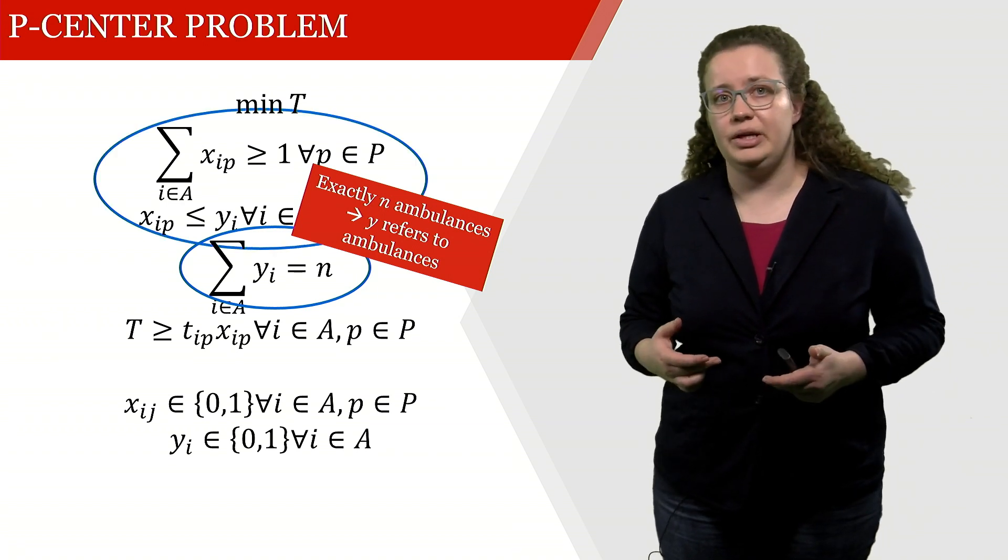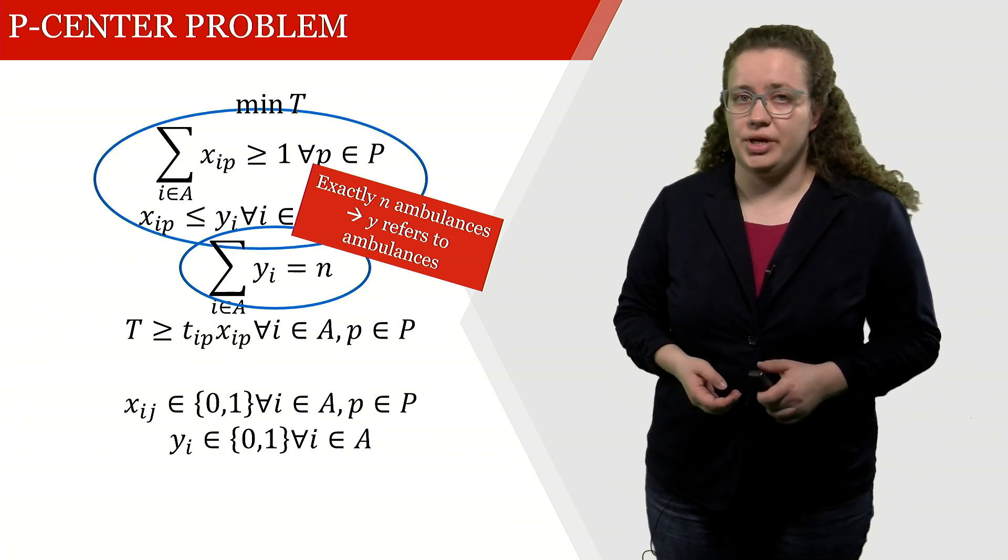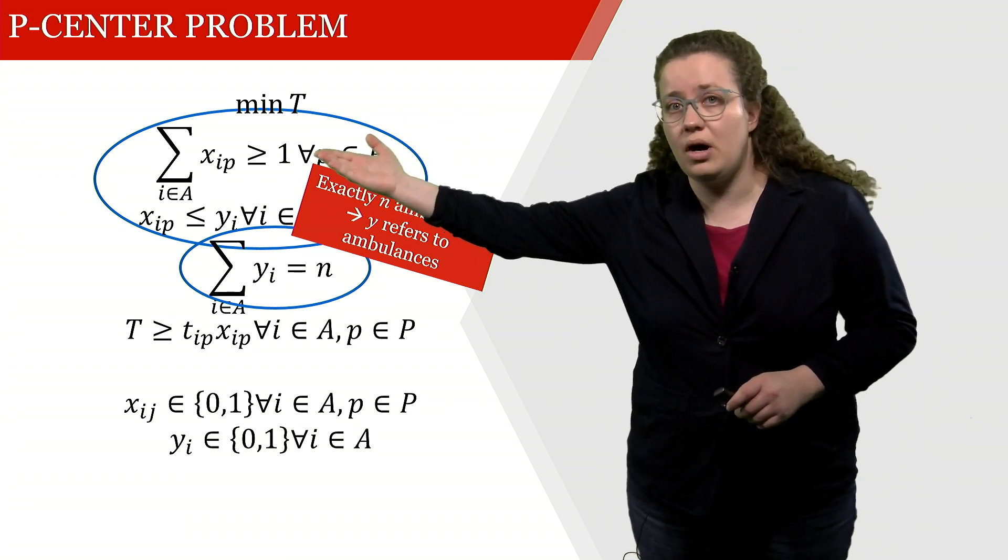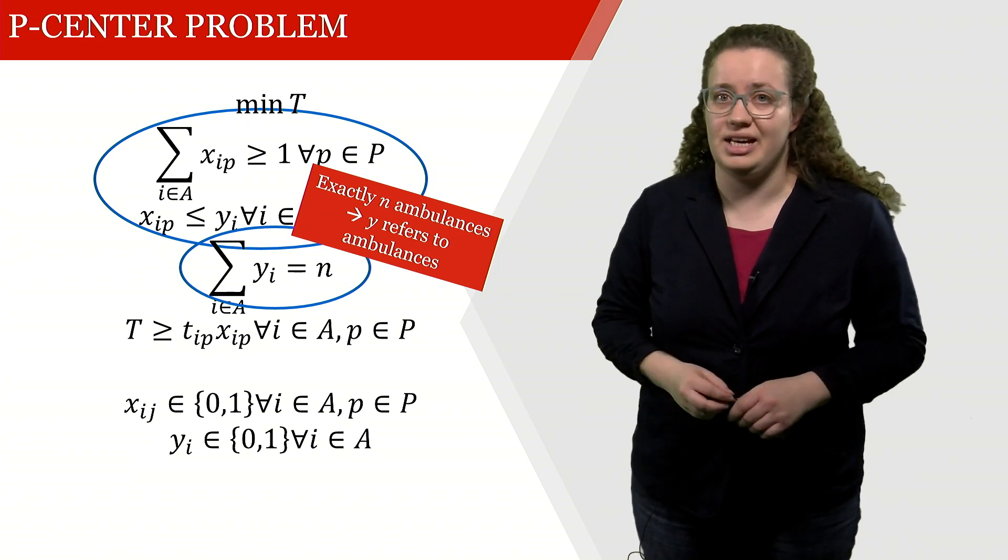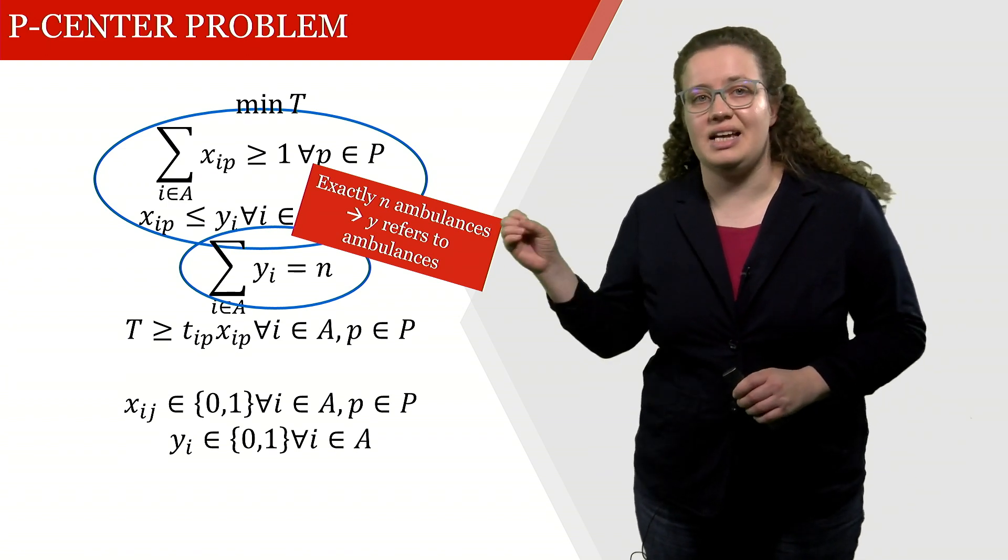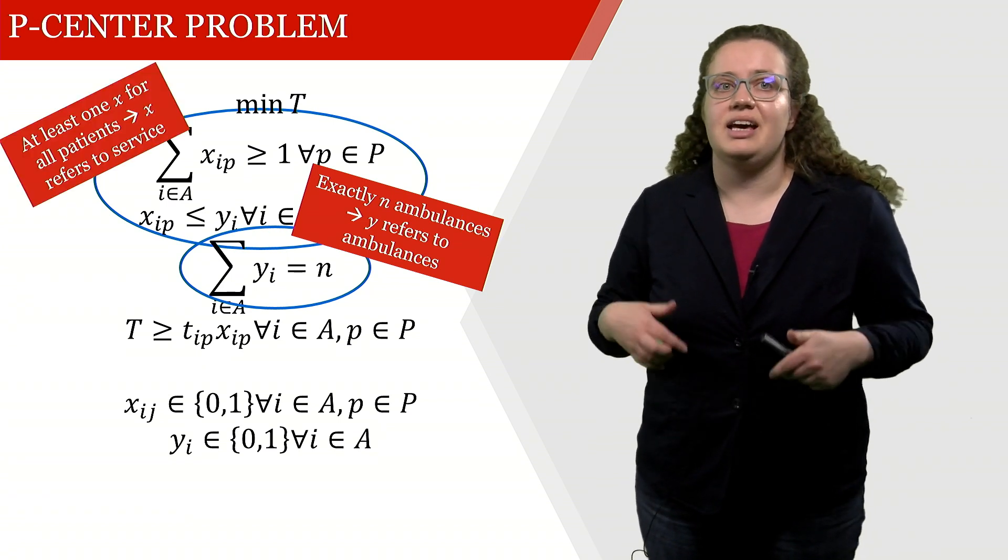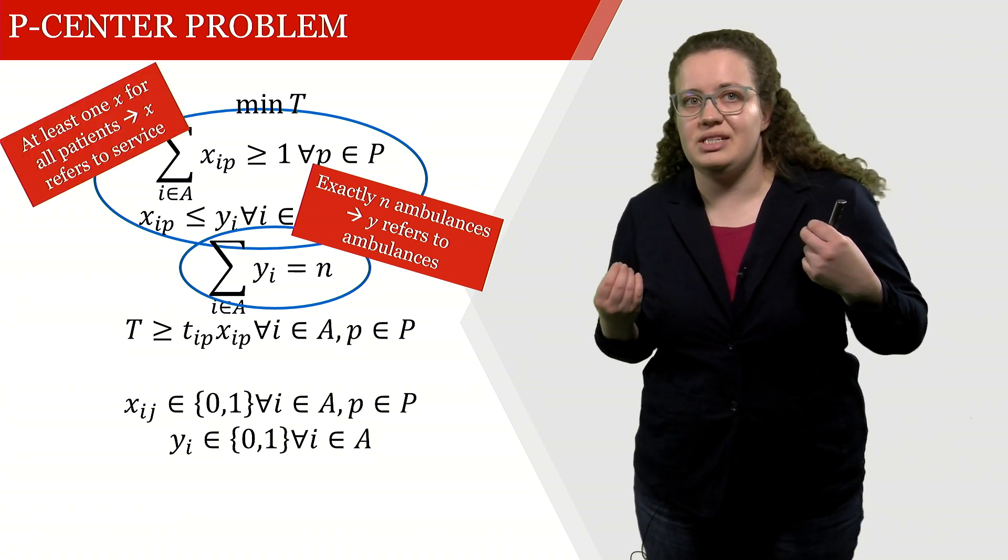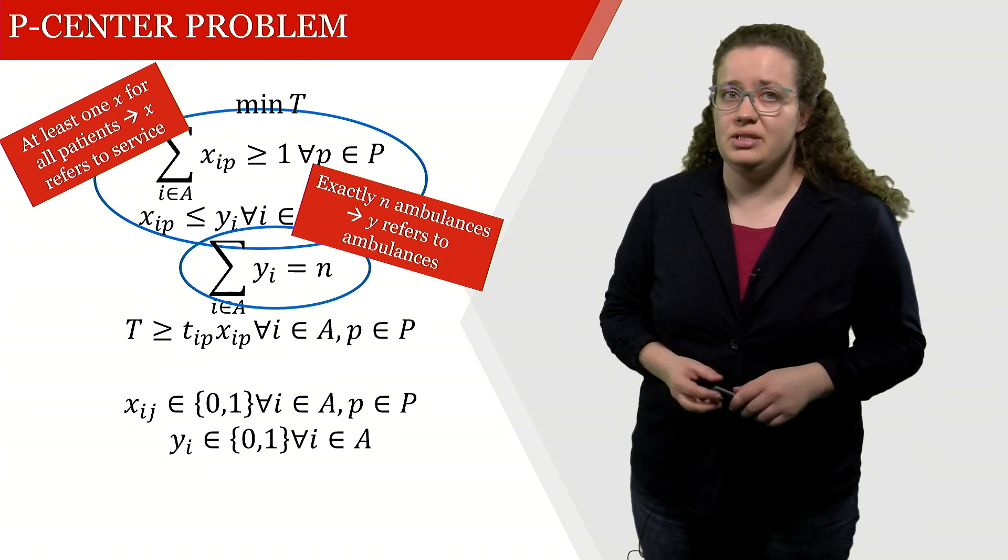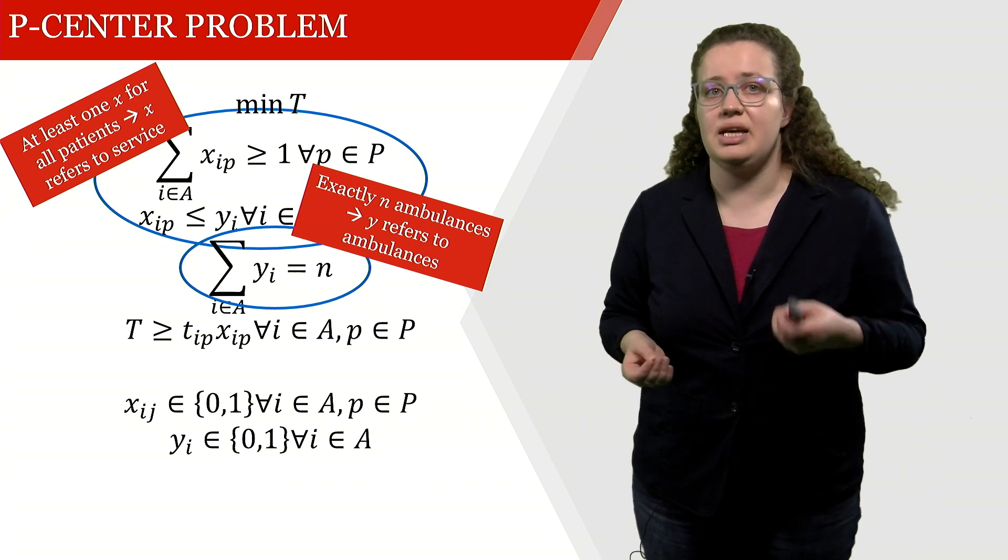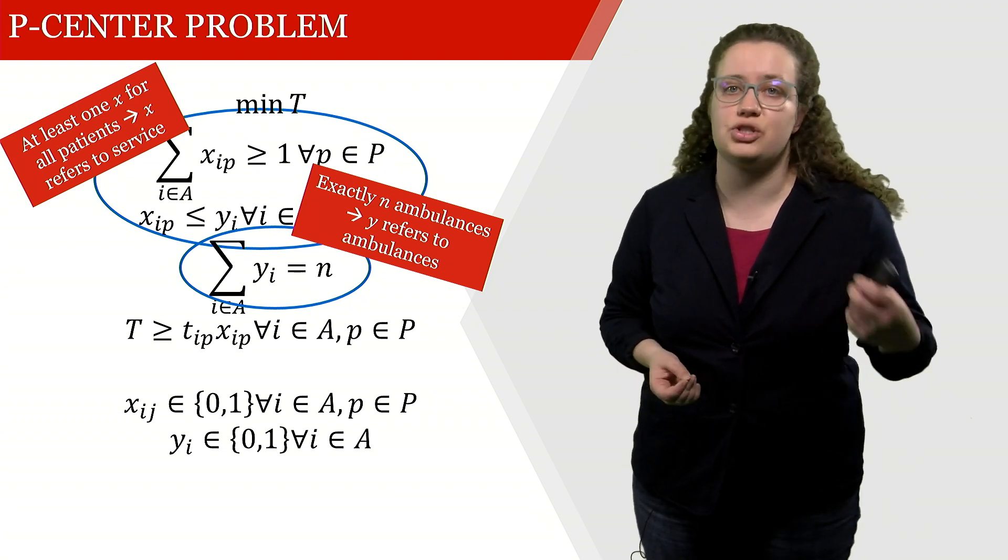Then we're looking into the upper two constraints which tell us on the one hand side that at least one x actually has to be open and secondly that x has to be smaller or equal to y. And that is so this is at least one for all patients which means that x refers to service. So a patient at this location is being served.